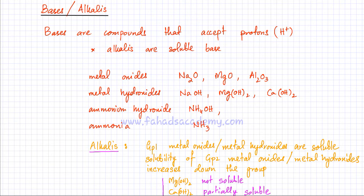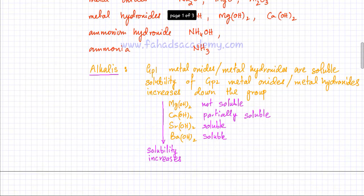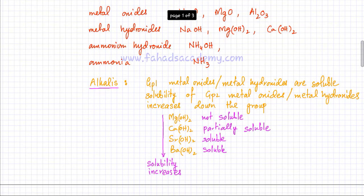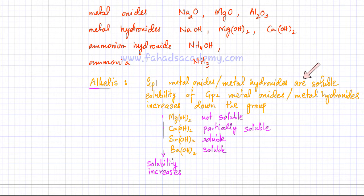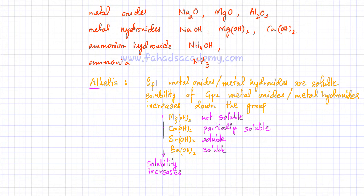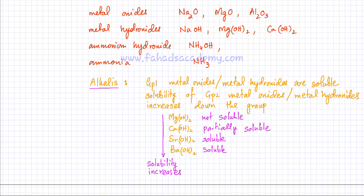The term alkali applies to those bases that dissolve in water. Group 1 metal oxides and metal hydroxides are all soluble — sodium hydroxide, sodium oxide, potassium hydroxide — they can all be referred to as alkalis because they dissolve and dissociate in water. So metal oxides and metal hydroxides belonging to Group 1 can all be classified as alkalis.